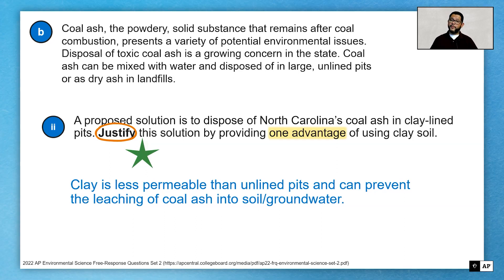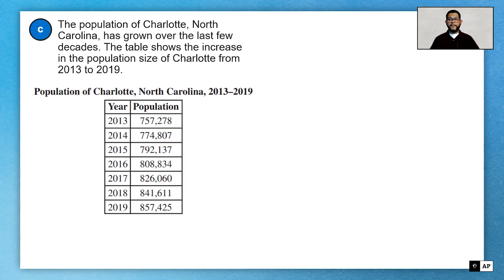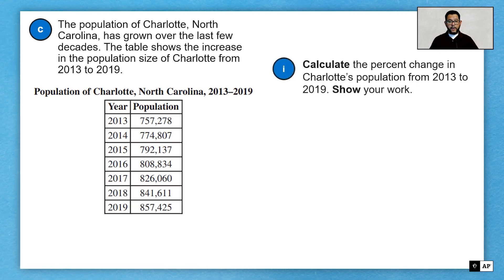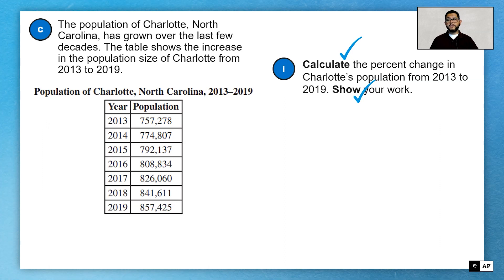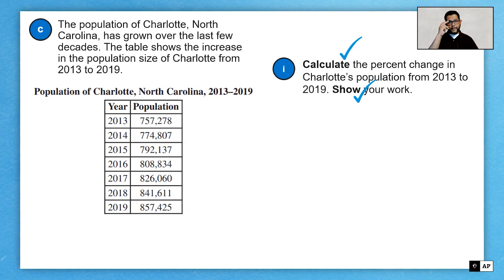Now the parts you've all been waiting for — let's get to the math. We've got a population question. Using the numbers given, they want us to calculate the percent change in Charlotte's population from 2013 to 2019. There it is — 'calculate,' and here's the key one: show your work. Some of you may be math whizzes and think it's too easy to write down, but these questions are two-point questions. You get one point for the correct answer, and a second point for showing the work with your units. Always, always, always show the work, no matter how simple.